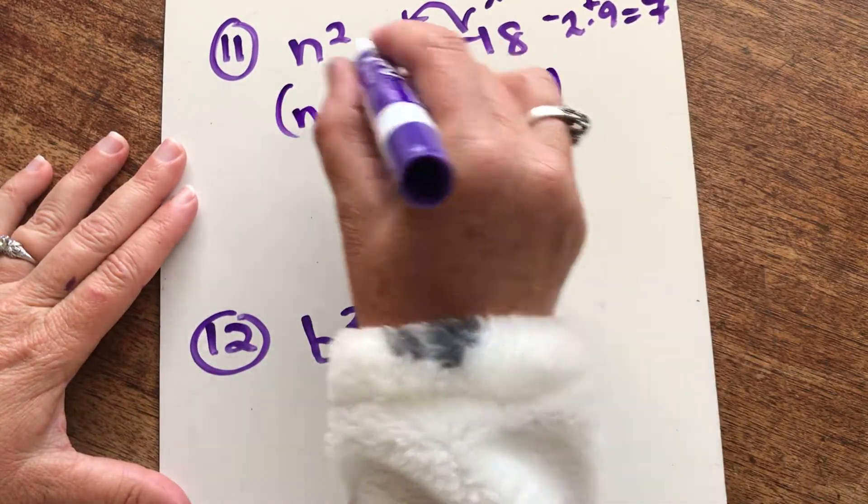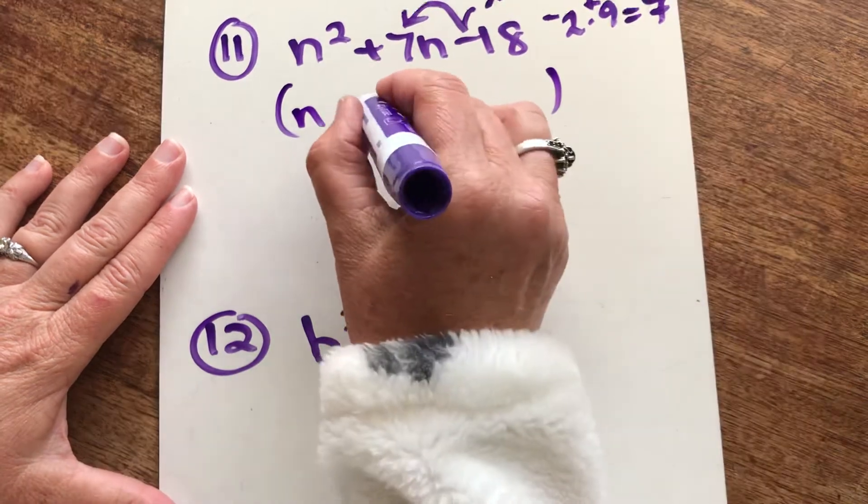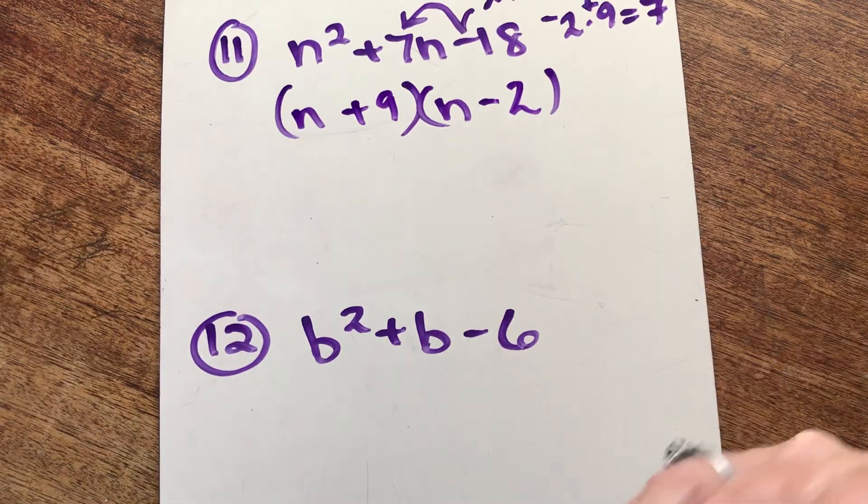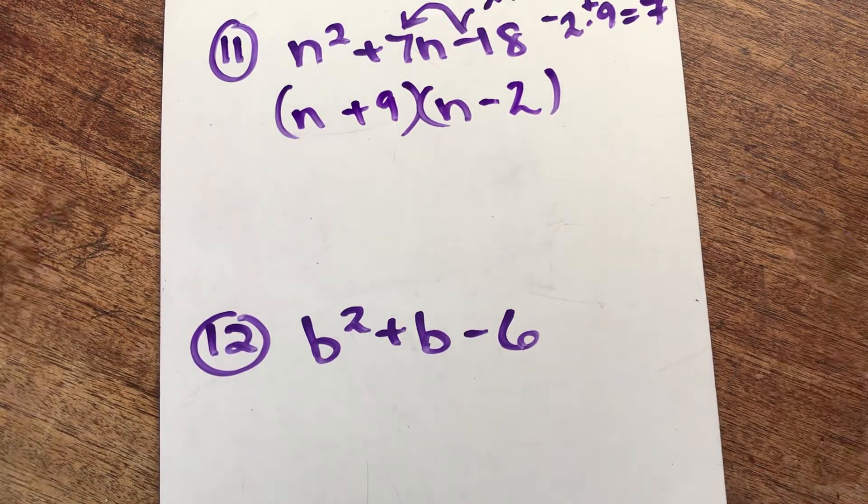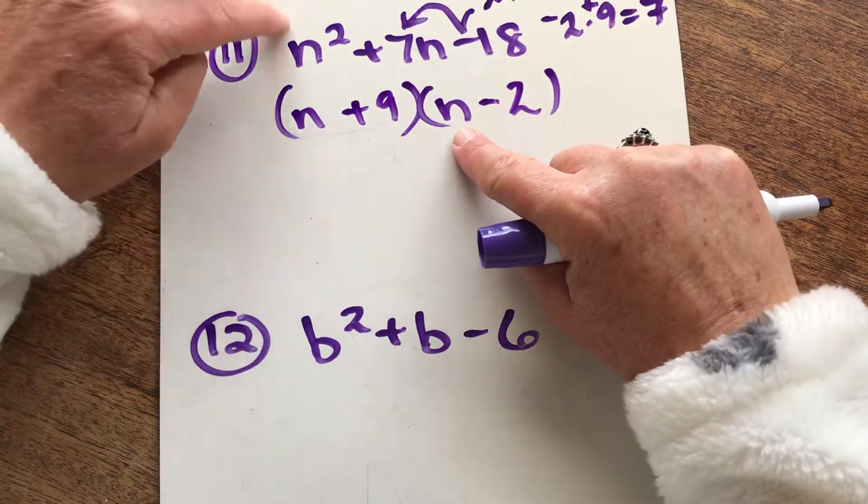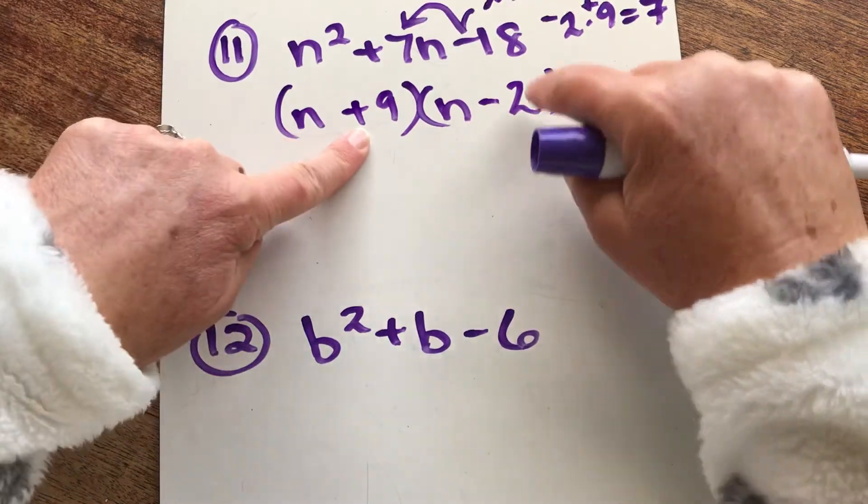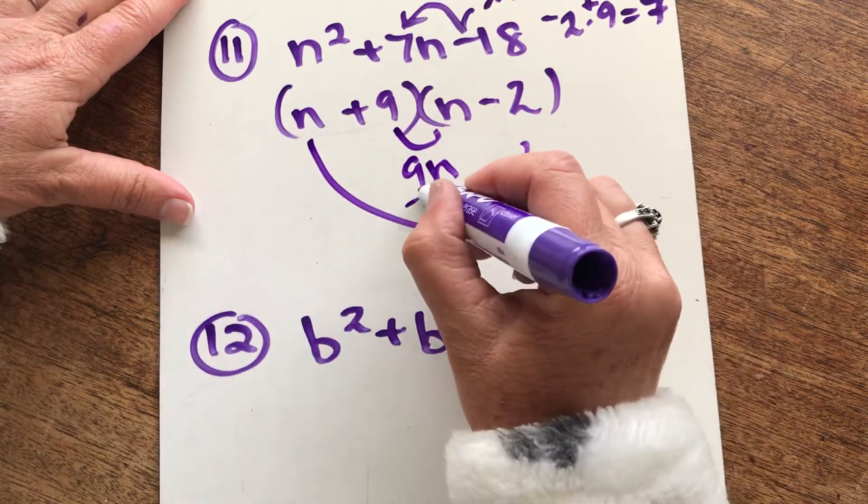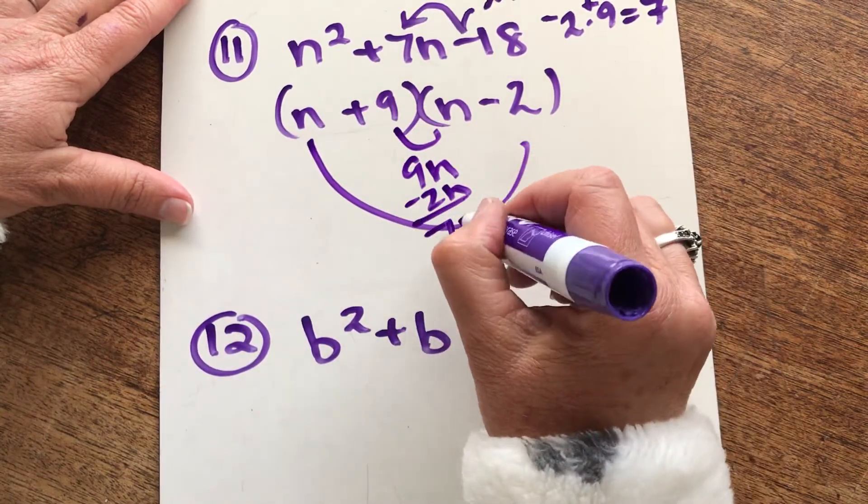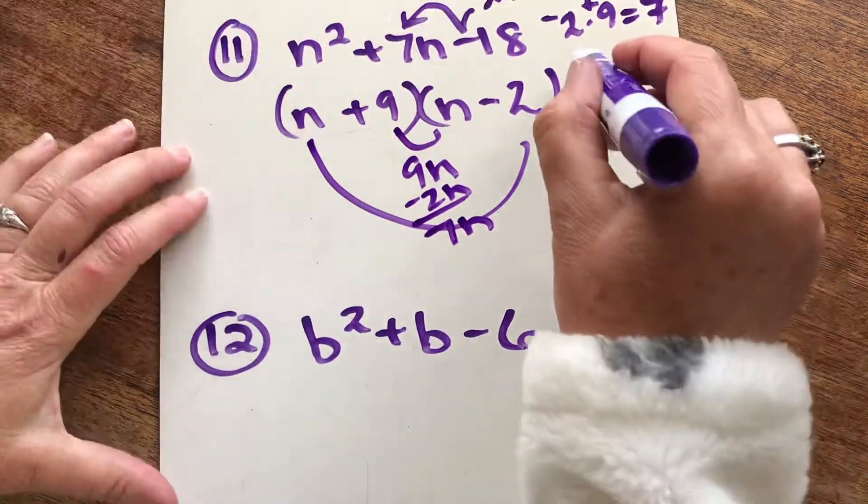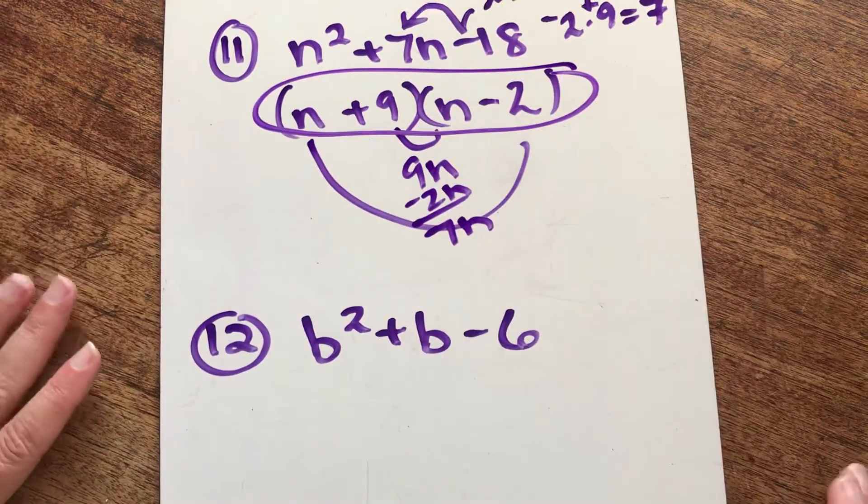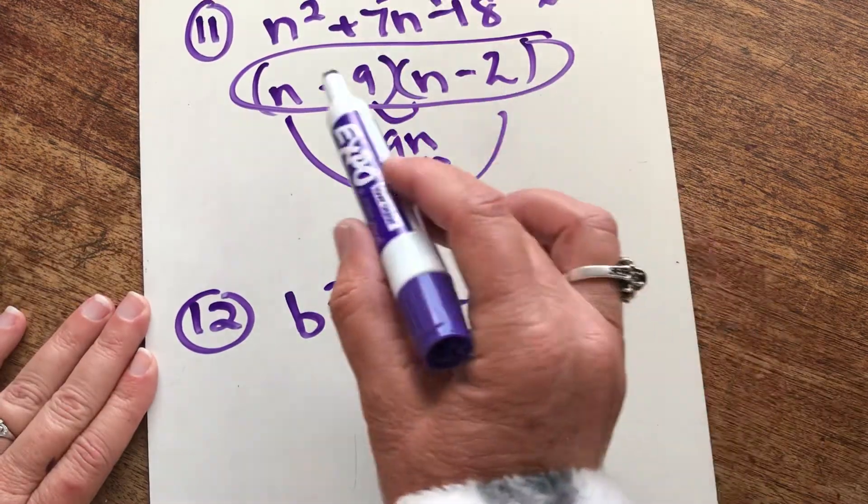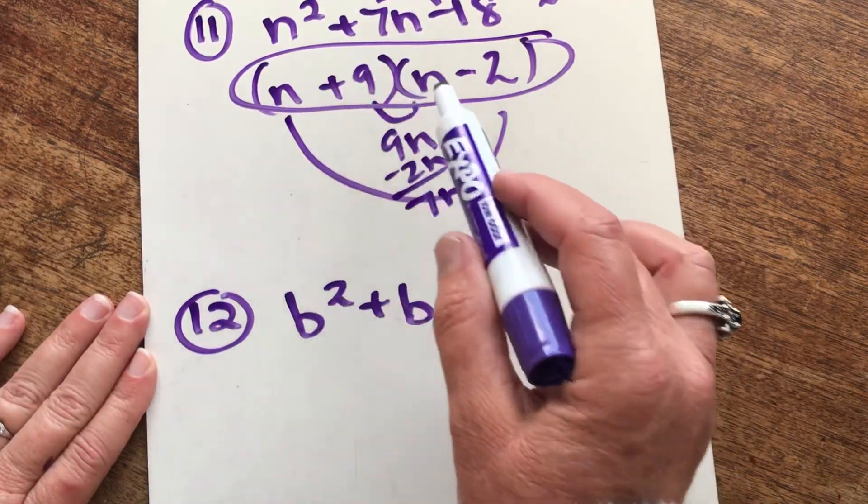We have n times n is n squared. Positive 9 and negative 2. And if you don't believe me, this is where you're going to multiply it out, or just double check your answer real quick. Here we go. n times n is n squared. 9 times negative 2 is negative 18. And the middle, that's positive 9n minus 2n. Does that give me the 7n that I have? Yes, it does. Final answer is right there. You could have the n minus 2 first and the n plus 9 second.